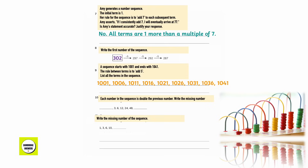Each number in this sequence is double the previous number. Write the missing numbers: 1.5 and 96.